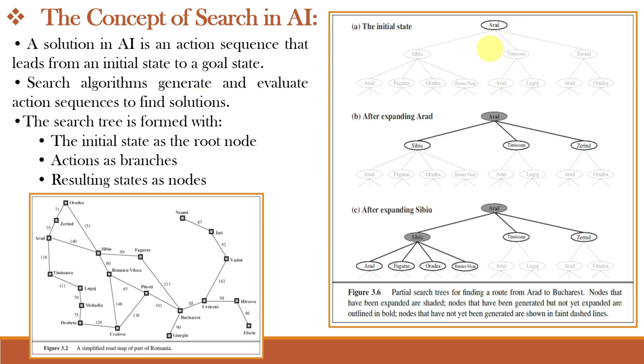In the search tree, the initial state is at the root node. Different branches of the tree are actions. Different nodes are the resulting states. It is obvious that each possible action leads to a new state.